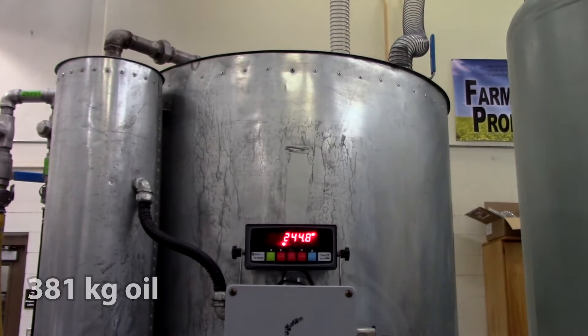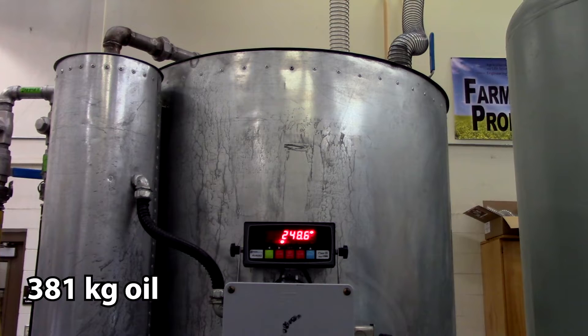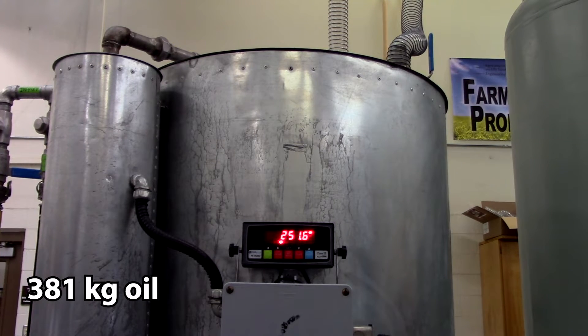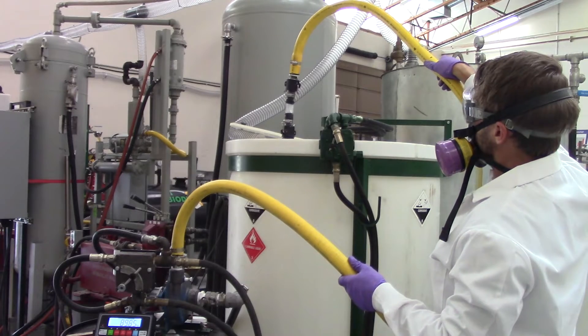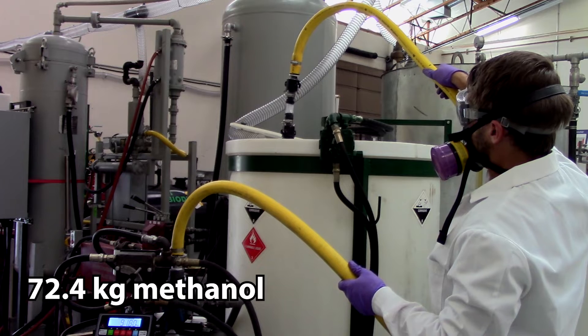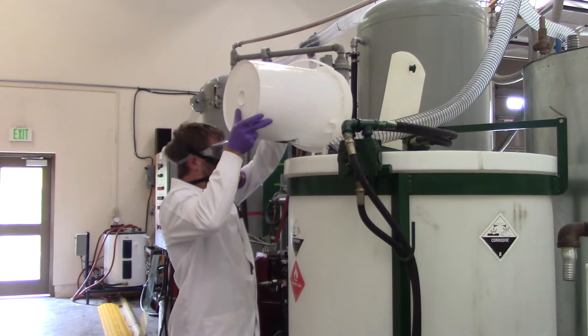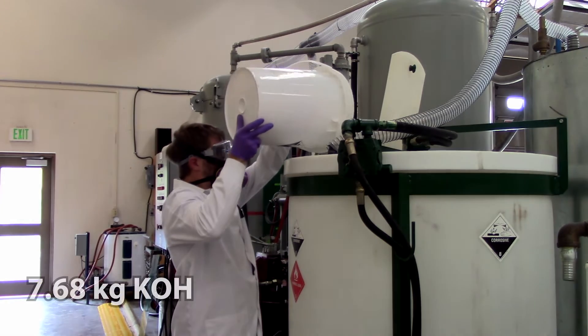We then pump our 381 kilograms of oil into the reactor, which is also being heated and mixed. We add 80% of the methanol, about 72.4 kilograms, to an auxiliary tank, as well as 80% of the catalyst, about 7.68 kilograms.